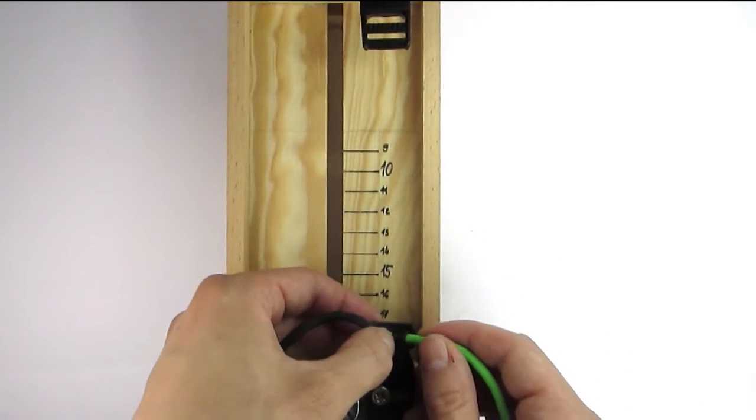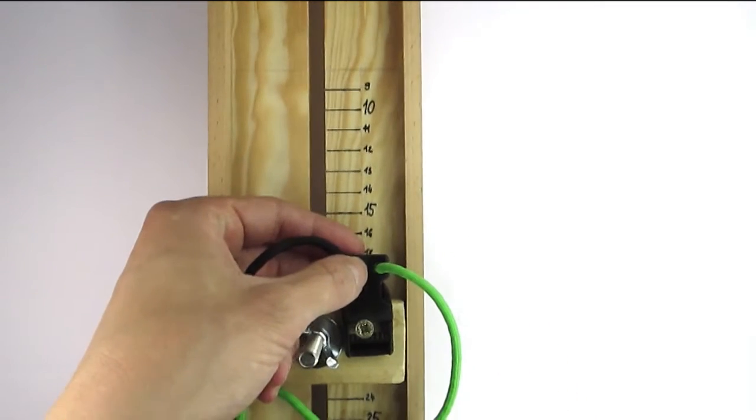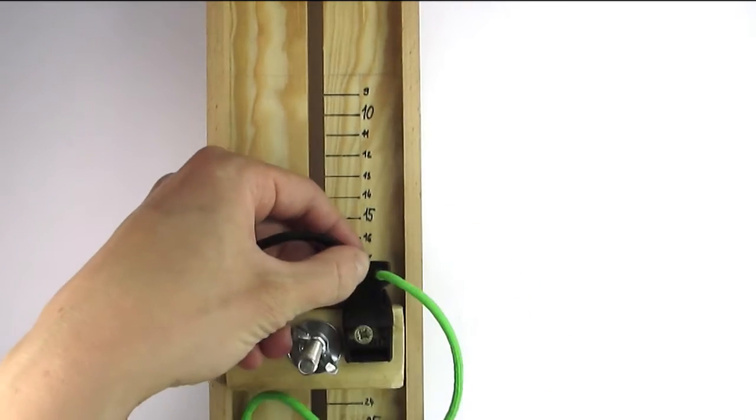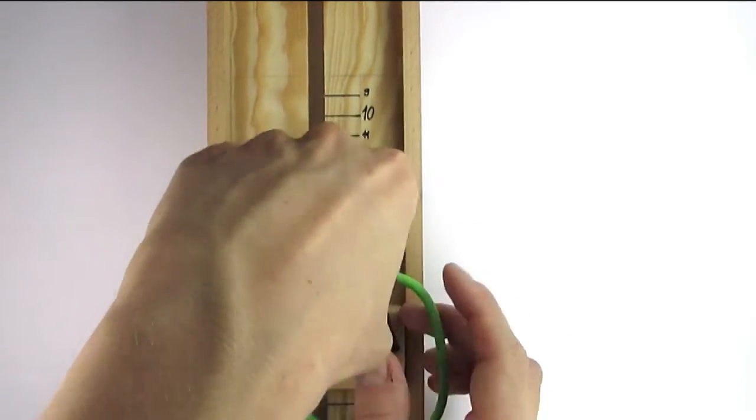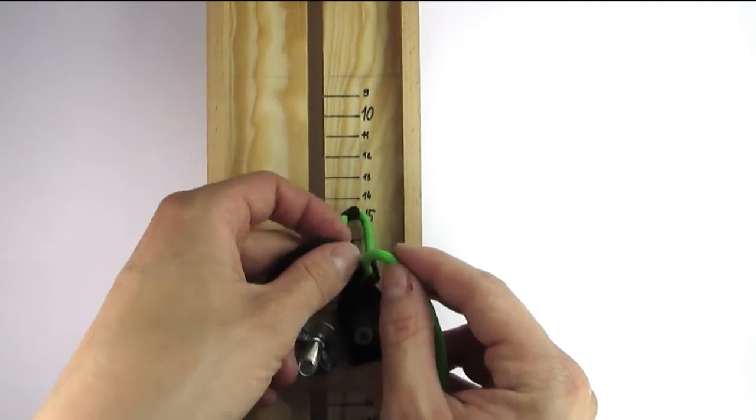I'm going to now attach it to the bottom buckle part using a lark's head knot, basically sliding it in at the halfway point of the cords like this and then fit the ends through.